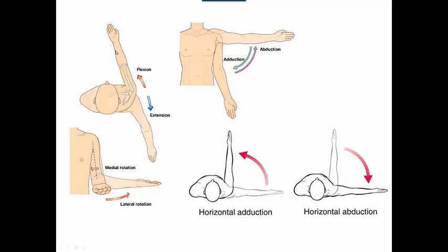We first have flexion and extension in the sagittal plane. We have AB and ADduction in the frontal plane, and medial and lateral rotation in the horizontal plane.